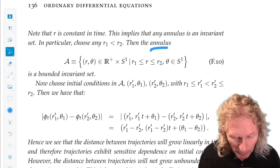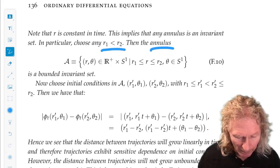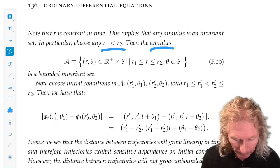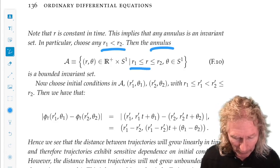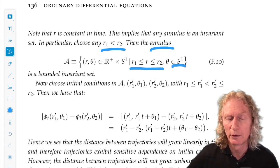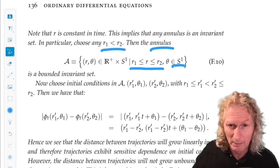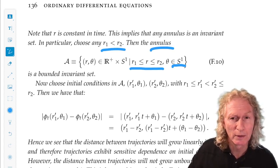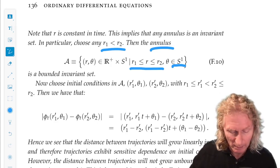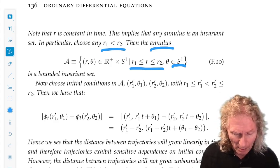So let's make an invariant set, an annulus. So we pick two radii, r1 less than r2, and we look at all r values in between, and theta on the circle. So this is an annulus. It's invariant, because if you start in it, you stay in it, you can't, because the r component doesn't vary in time.